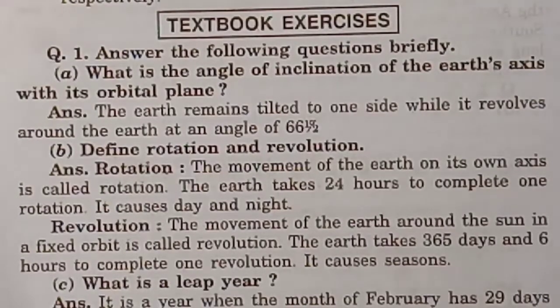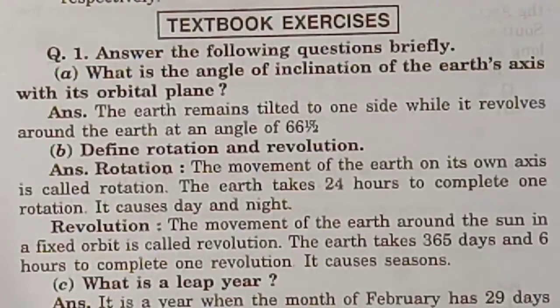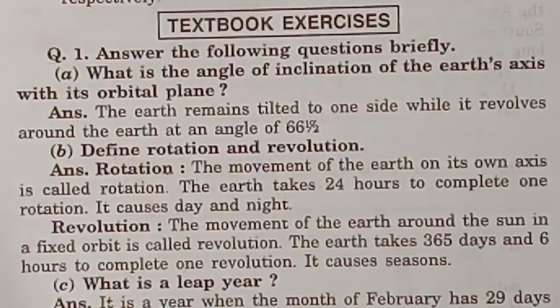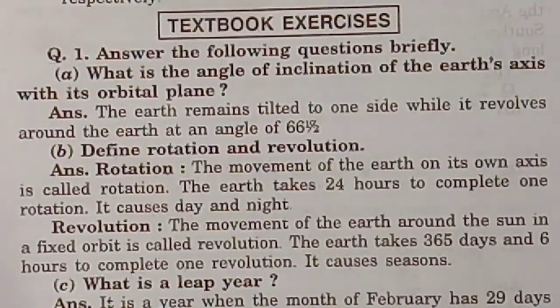What is the angle of inclination of the Earth's axis with its orbital plane? The Earth remains tilted to one side while it revolves around the sun at an angle of 66.5 degrees.